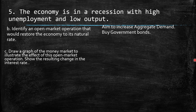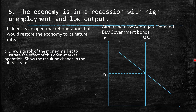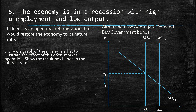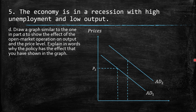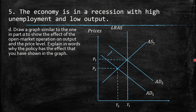c. Draw a graph of the money market to illustrate the effect of this open market operation, showing the resulting change in the interest rate. We increase the money supply to decrease the interest rate and have a positive impact on aggregate demand. d. The policy should increase aggregate demand from AD1 to AD2 to restore the same level of output Y1.